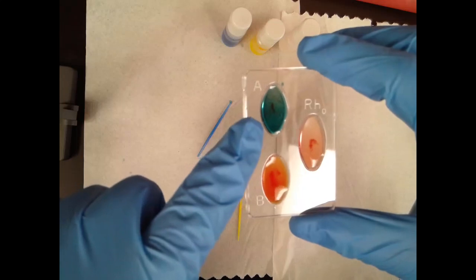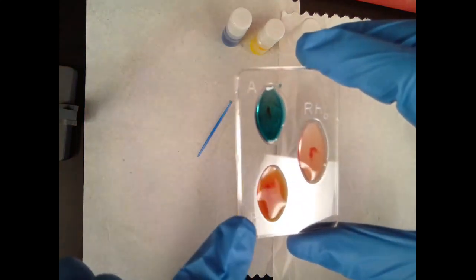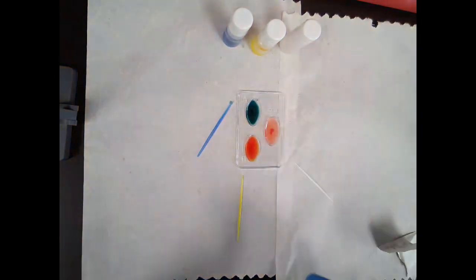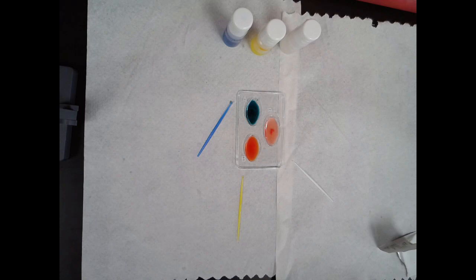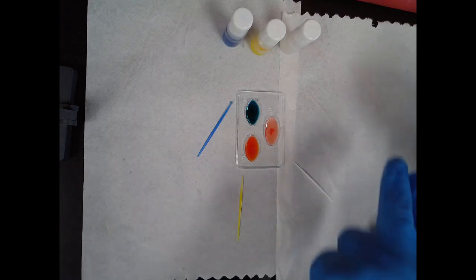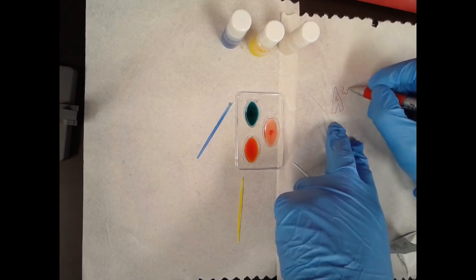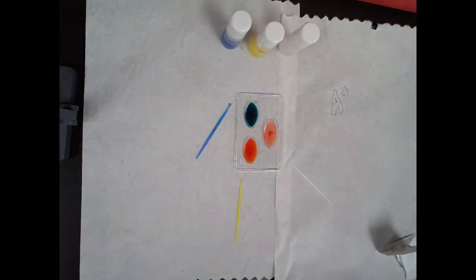We have agglutination with A, we have no agglutination with B, and then we have agglutination with the RH factor. I want you to tell me, well, granted, that would be weird if you told me, but I want you to just take a moment to think, what is my blood type? My blood type is A positive.